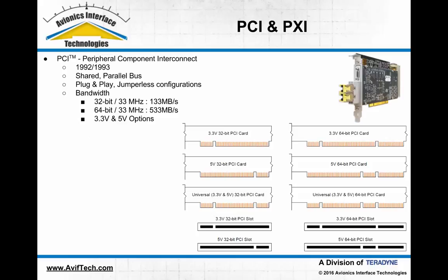First, we'll start with a discussion of PCI — Peripheral Component Interconnect. PCI is a shared parallel bus, an interconnect of multiple peripherals, CPU, memory, and other system resources in a workstation over a parallel data bus. There were 32-bit and 64-bit bus variants, providing up to 533 megabytes per second bandwidth with the 64-bit variant. PCI originally had options for both 3.3 volt and 5 volt operation.